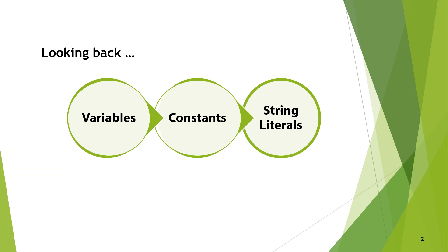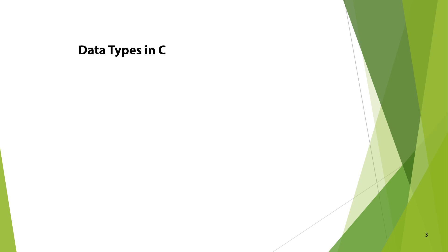Hello students. In the last lecture we discussed 3 types of tokens: variables, constants, and string literals. Now we will see the next topic, which is data types in C.